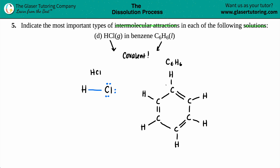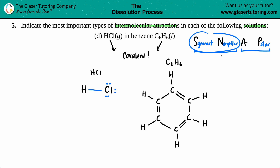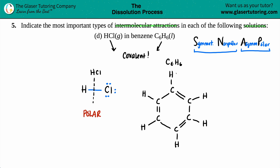Now we determine if HCl and C6H6 are polar or non-polar using the acronym SNAP. S-N go together: Symmetrical = Non-polar. A-P go together: Asymmetrical = Polar. If you cut HCl down the middle, you have H on one side and Cl on the other — that's asymmetrical, so HCl is polar.